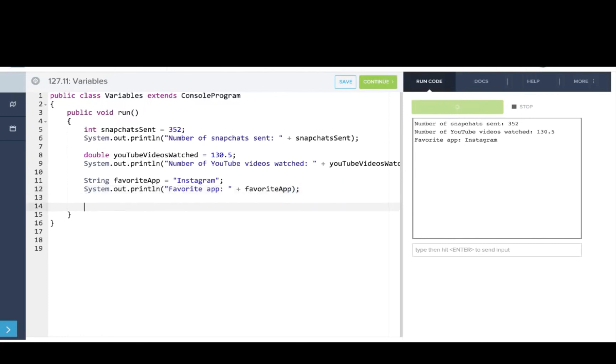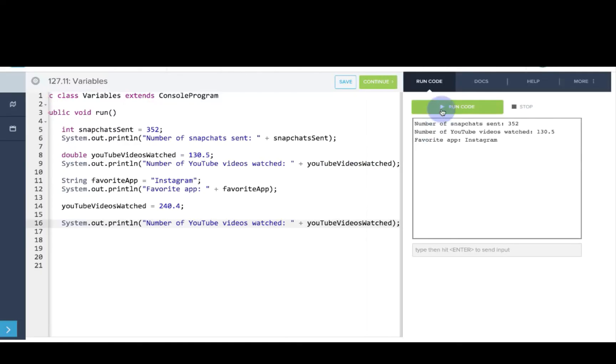Let's say we go and we watch a lot more YouTube videos. We'll say youtubeVideosWatched is now equal to 240.4. Now if we print out that value, we'll print out the same line as before by copy pasting it. You'll see that the output will be different because the value of the variable has changed.